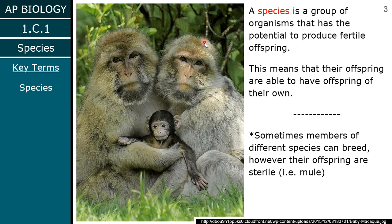That's really important because some individuals of different species can interbreed. A donkey and a horse, for instance, can interbreed and they'll have a mule. However, a mule is sterile — a mule cannot have its own offspring. So we don't consider a horse and a donkey to be the same species just because they can have a child, because that child is sterile.